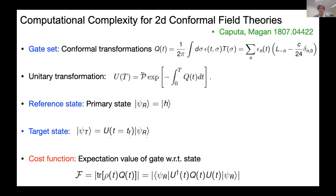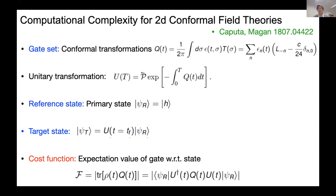Question from audience: In your transformation, you have only one copy of Virasoro? Yes, it's all in the chiral sector. You can do the other sector independently. As I said, this by no means covers the entire Hilbert space, and we will see aspects of this later on. Let me emphasize: it is somewhat restrictive to just work with the set of conformal transformations, and this will lead to two particular problems we'll discover later on, for which I will also propose a solution.